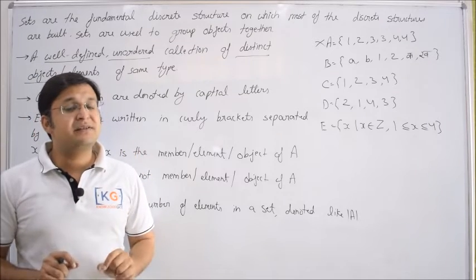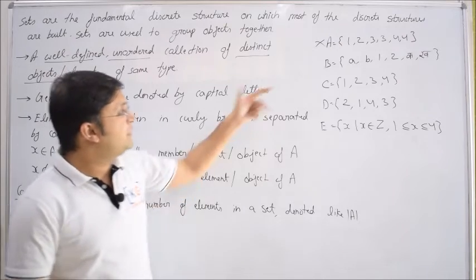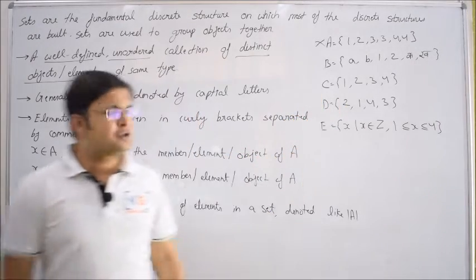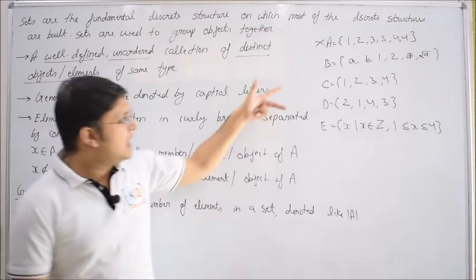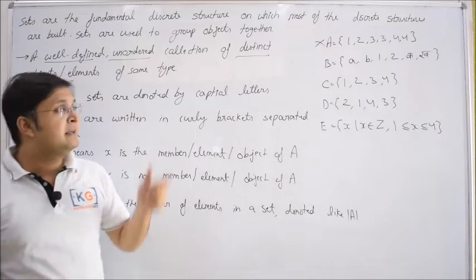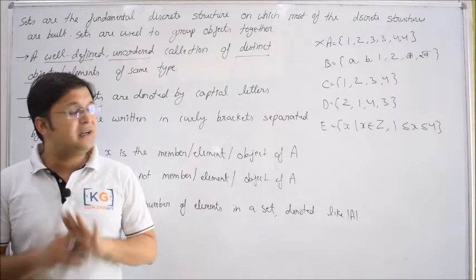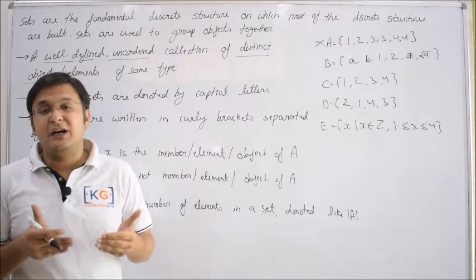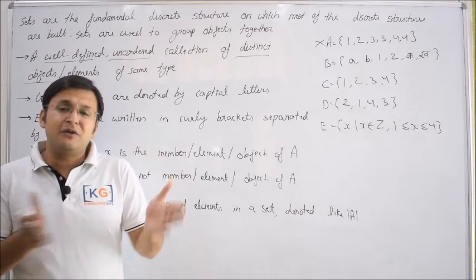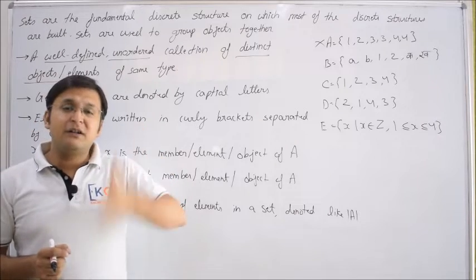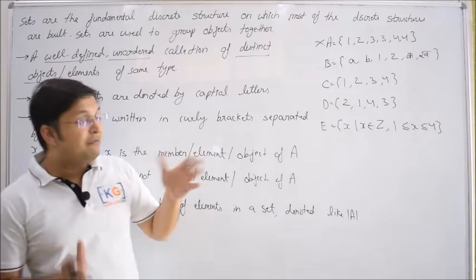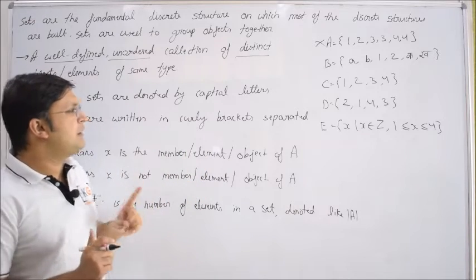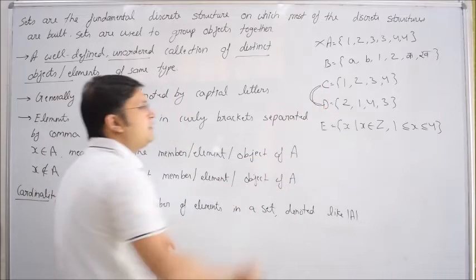The second key property: a set is an unordered collection. For example, set C contains 1, 2, 3, 4 and set D contains 2, 1, 4, 3 — the same elements but in different order. Are they the same? Certainly yes. The order in which elements are written does not matter at all. Even in a relational table, the order of rows and columns is irrelevant because tables are fundamentally based on sets, where order makes no difference.